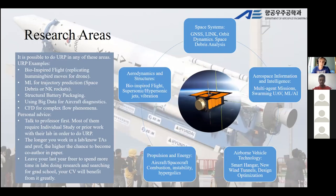The agenda of aerospace engineering at KAIST has five main fields: space systems, information and intelligence, airborne vehicles, propulsion and aerodynamics, and structures. The main research topics are provided on the chart.